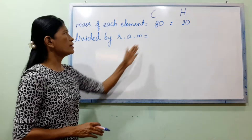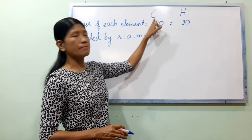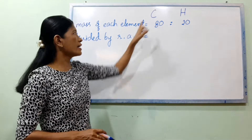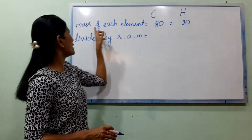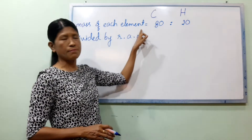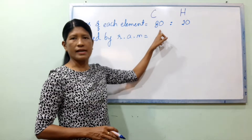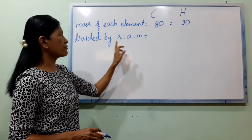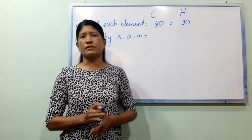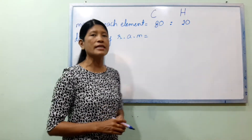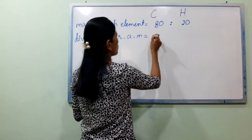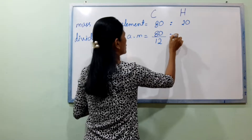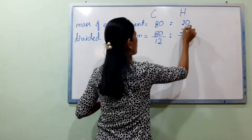In the common form, the elements carbon and hydrogen — the mass of each element: carbon is 80 percent, and hydrogen is 20 percent. Divided by the relative atomic mass: carbon's relative atomic mass is 12, and hydrogen's is 1.